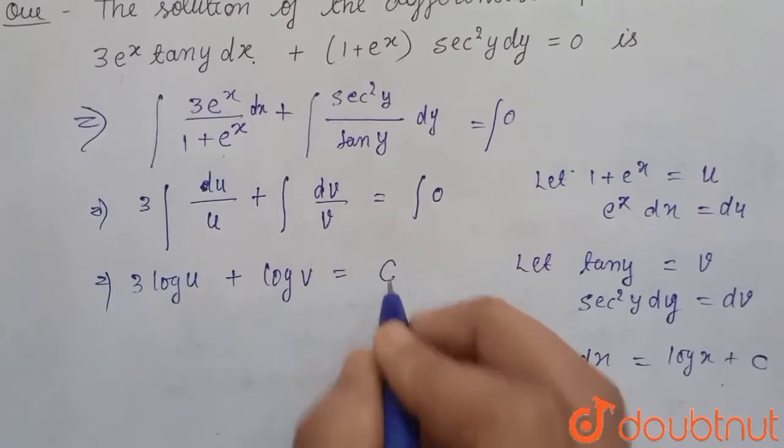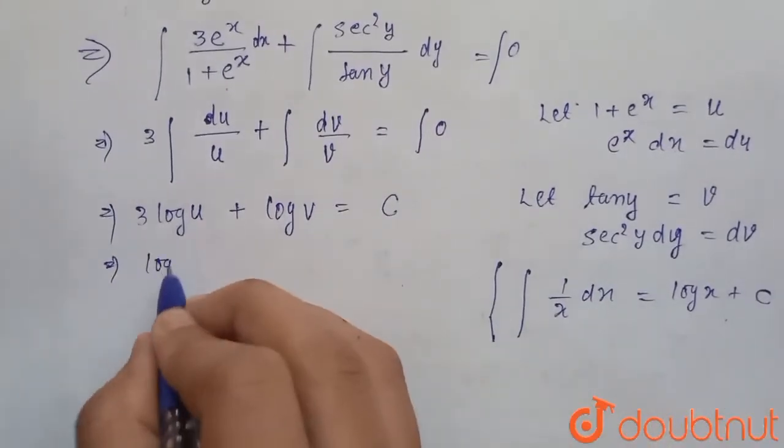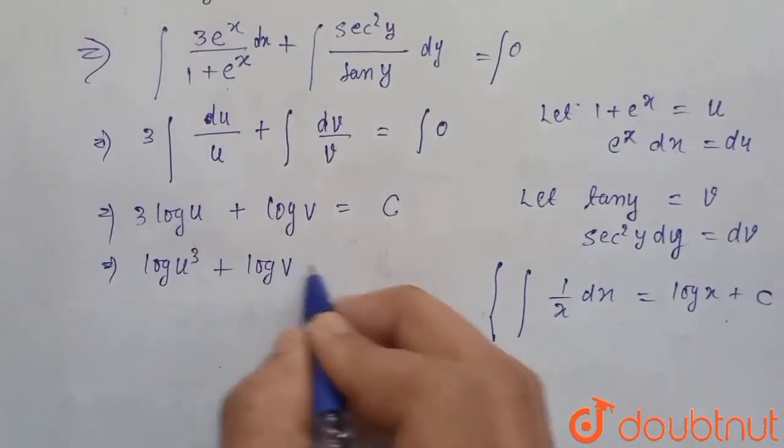equals c. Now by property of log, we can write this as log u³ plus log v equals c.